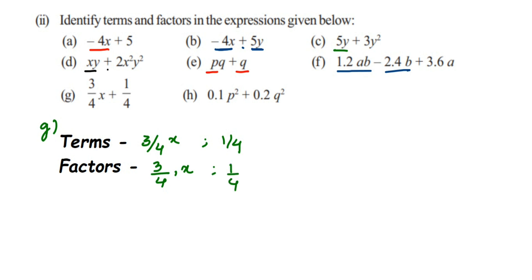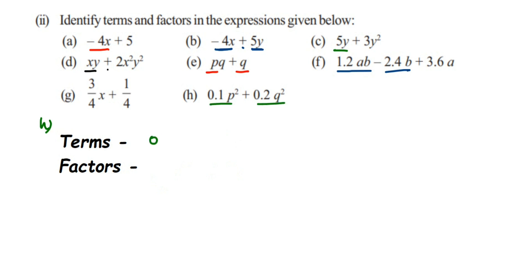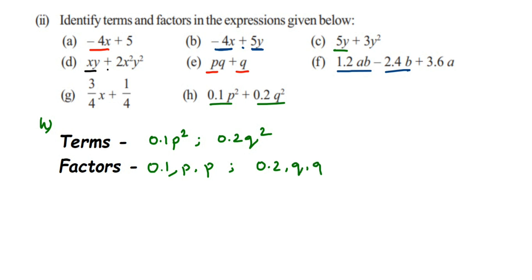Last expression: 0.1p square plus 0.2q square. Two terms are present: 0.1p square and 0.2q square. For the first term, the factors are 0.1, p, and p. For the second term, the factors are 0.2, q, and q.